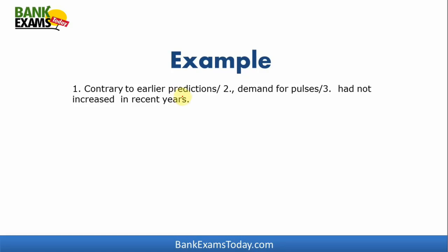Then: "Contrary to earlier predictions, demand for pulses had not increased in recent years." Recent years includes the current year as well, so the action is not over yet — the activity has not ended. Therefore it should be: "Contrary to earlier predictions, demand for pulses has not increased in recent years." Because the activity is still ongoing or included in the present, we must use the present tense — 'has not increased.'